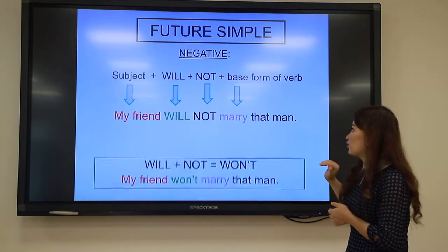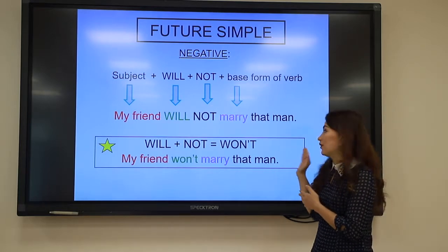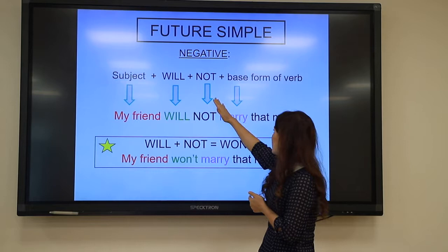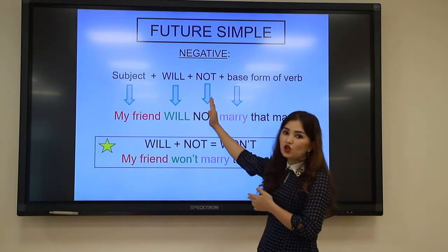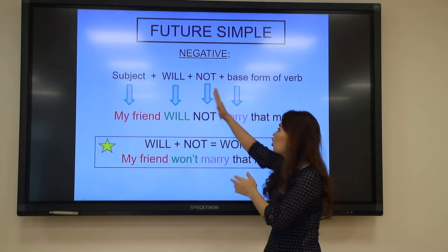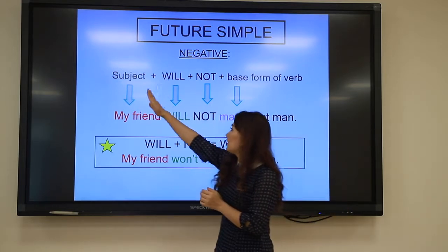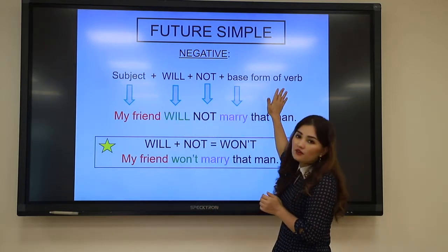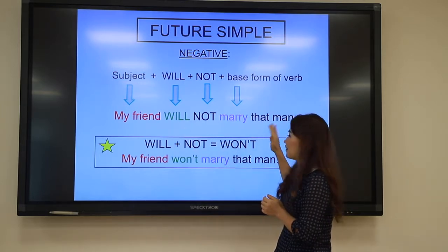The negative structure is: subject + will + not + base form of the verb. For example: My friend will not marry that man.